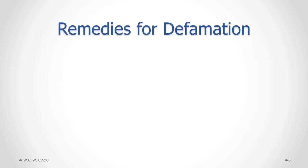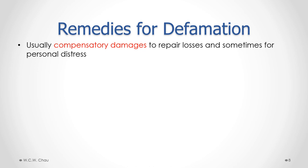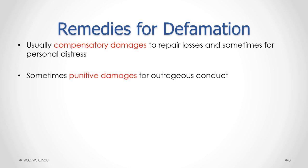If someone is successful in suing for defamation, the most common remedy is compensatory damages, which compensate for actual economic losses such as loss of a job or business opportunities. Courts may also award damages for personal distress caused by the defamation. Less common is the awarding of punitive damages, which will be awarded if the court considers the defamation to be outrageous conduct — done in a horrible, outlandish manner that warrants sending a message and punishing the person.